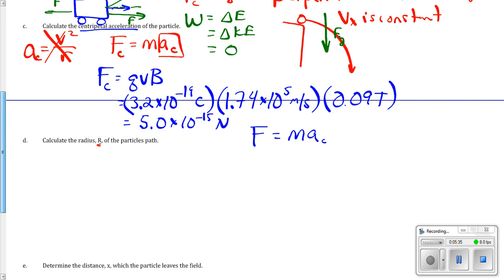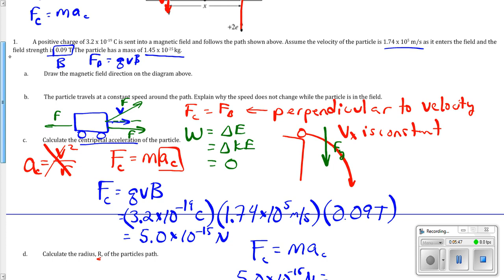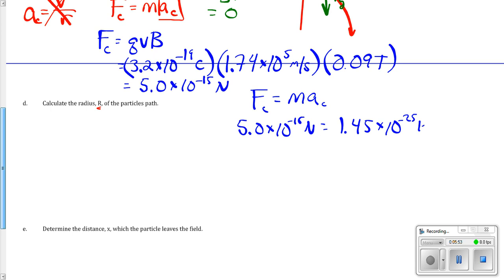So, 5.0 times 10 to the negative 15 newtons equals the mass of this particular particle is 1.45 times 10 to the negative 25. So, centripetal acceleration is 3.45 times 10 to the 10th meters per second squared.